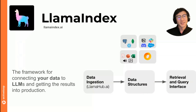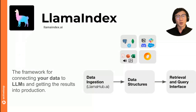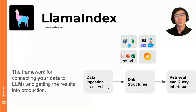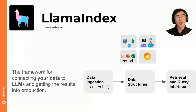Llama Index is a data framework for connecting your data to LLMs and getting these results to production. At a high level, our whole mission is to help you build LLM applications over your own private data, whether you're an individual developer or an enterprise. You start off with some data sources — this can include PDFs, APIs, services that you commonly use like Notion, Slack, and databases like structured databases and vector databases. We want to get all this data into the language model so you can unlock the capabilities of something like ChatGPT over this data.